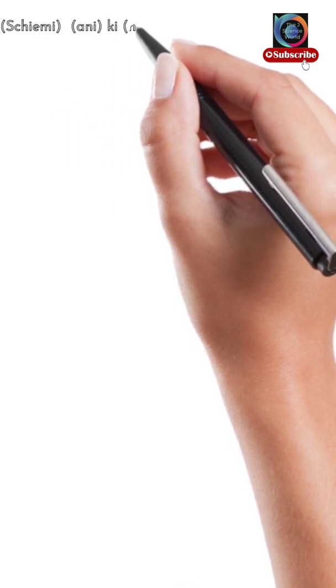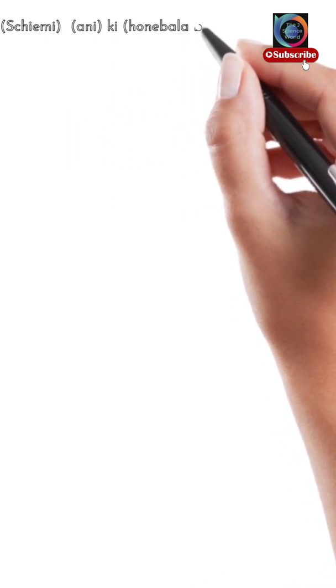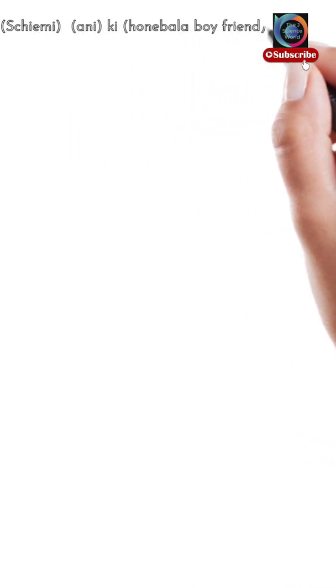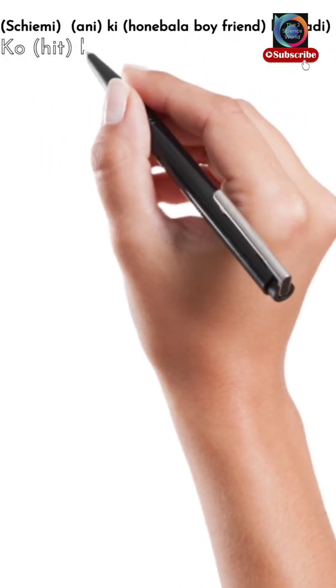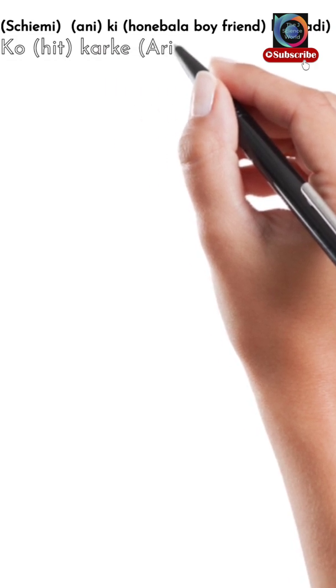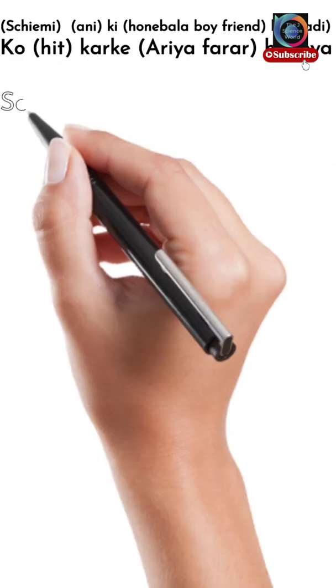This is our short trick: 'Chimi Ani ki honne wala boyfriend ke dadi ko heat karke aria farar ho gaya.' Every bracket consists of a special name or sentence. Let's discuss it.